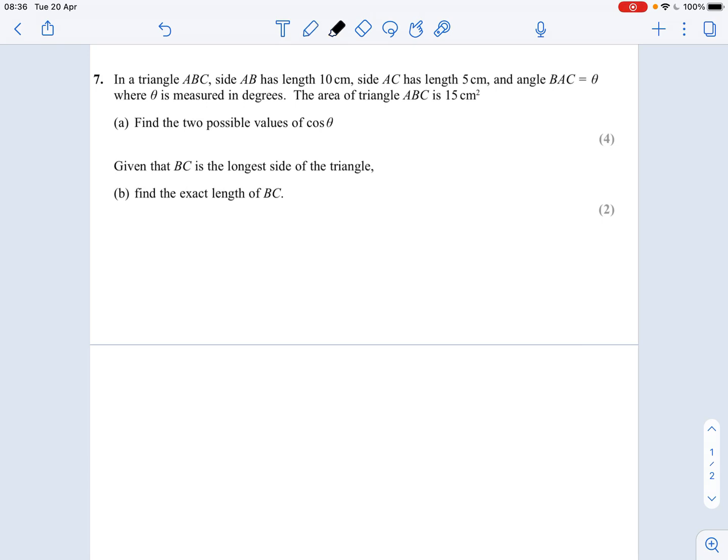So we are told that in a triangle ABC, side AB has length 10, side AC has length 5 in centimeters, and angle BAC is theta where theta is measured in degrees, and the area of the triangle is 15 square centimeters. So in part A we're asked to find the two possible values of cos theta.